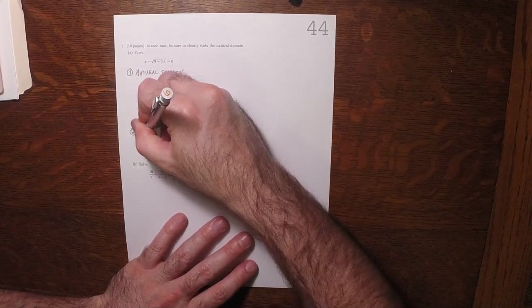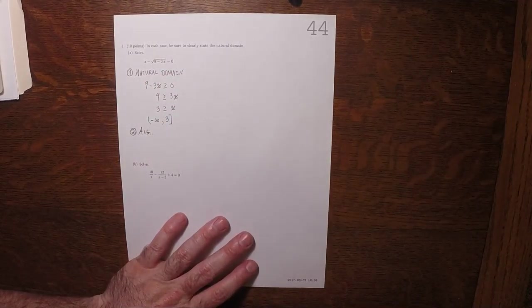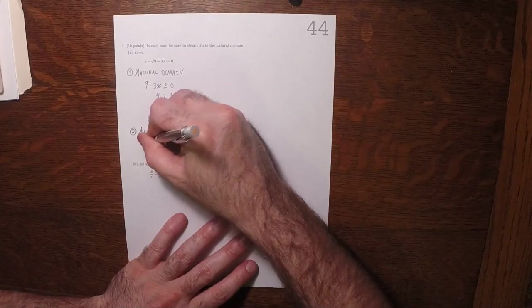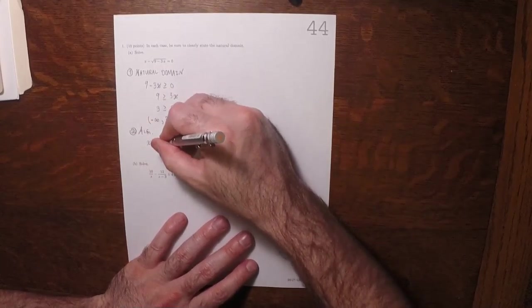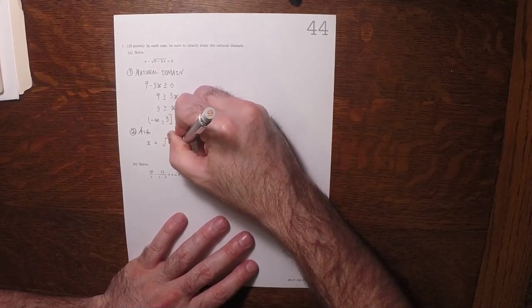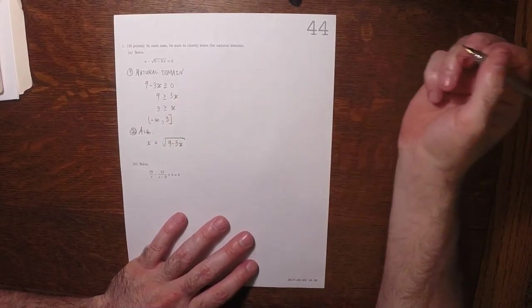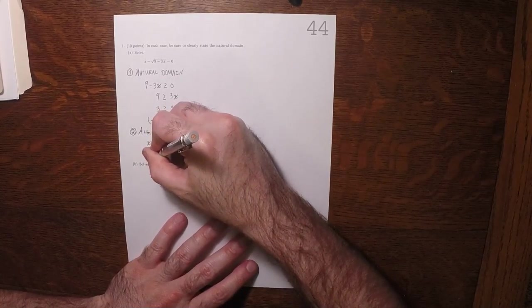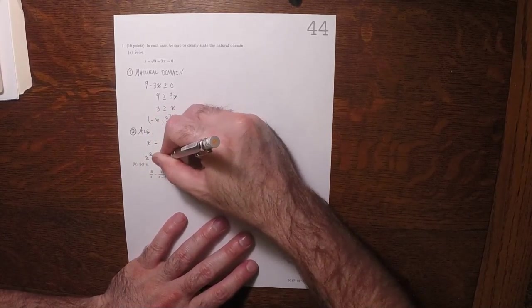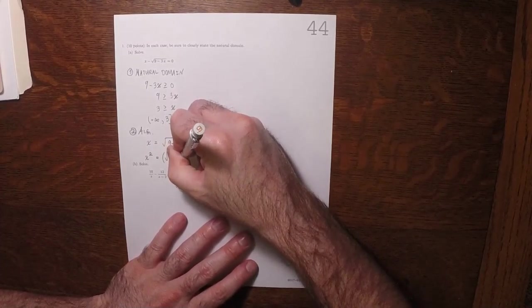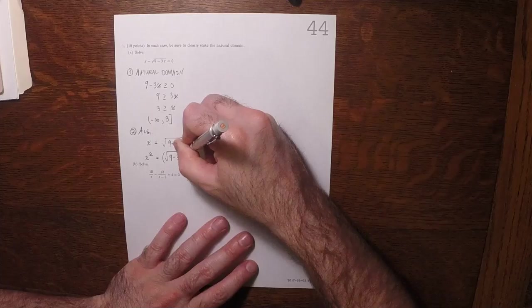For the actual algebraic steps, the first thing we'll do is I'll move the radical to the other side so that it reads x is square root 9 minus 3x. Then I'll square both sides. So x squared is square root 9 minus 3x squared.